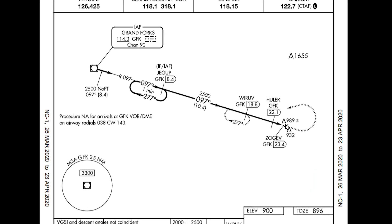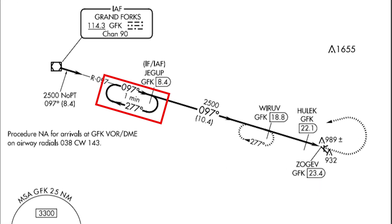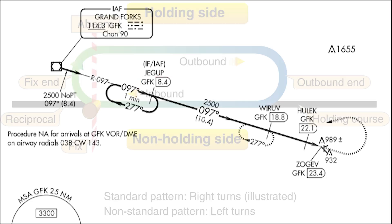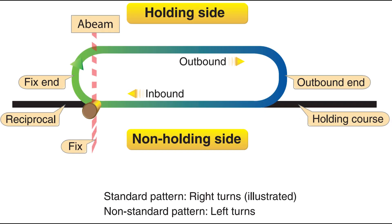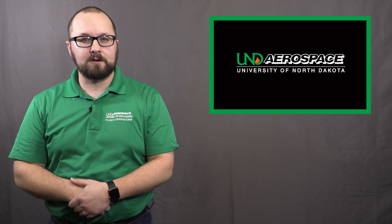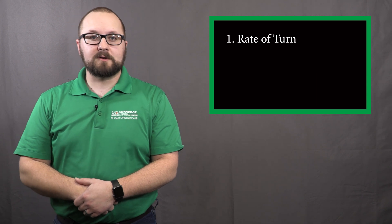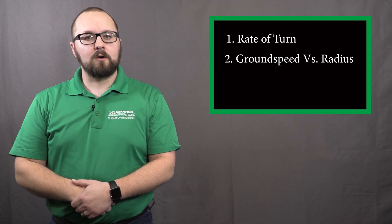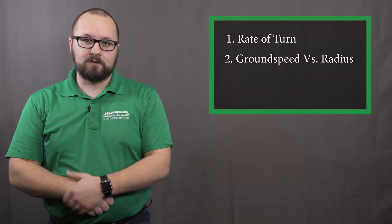A hold is when ATC clears you to fly a racetrack pattern over a given fix, or DME from a navigation aid, keeping you within a protected airspace. All holds have the same build; however, they are not always flown the same way. Today, we are going to break down two topics that will help you better visualize and understand what the holding pattern is going to look like. These topics are rate of turn and how ground speed changes the radius of your turn.